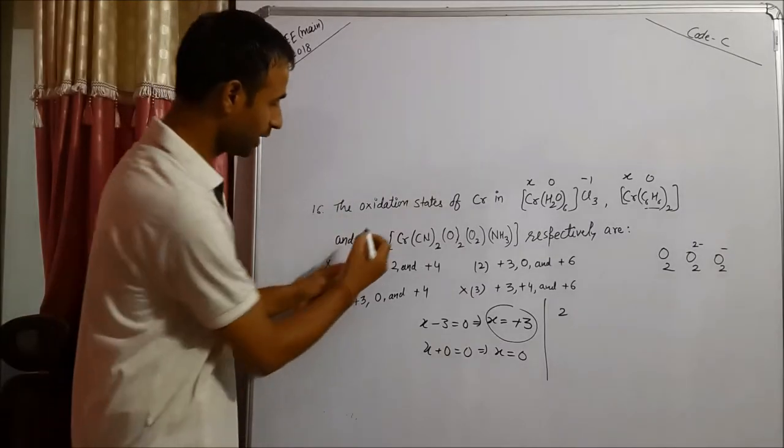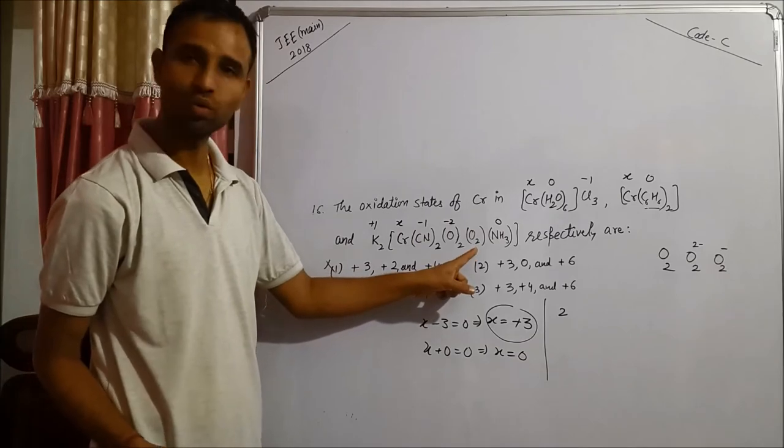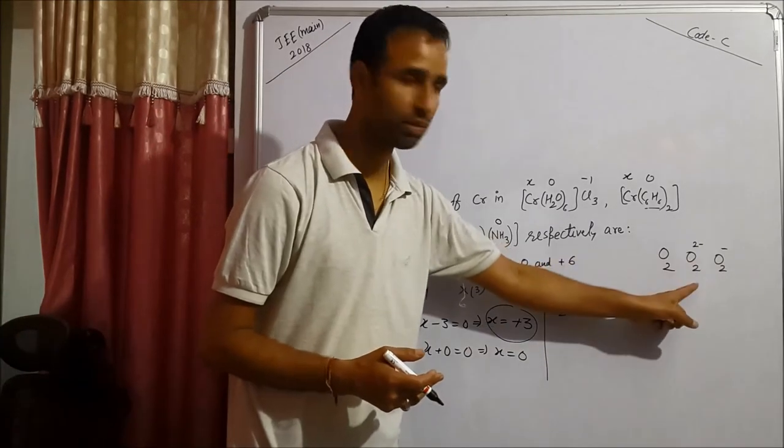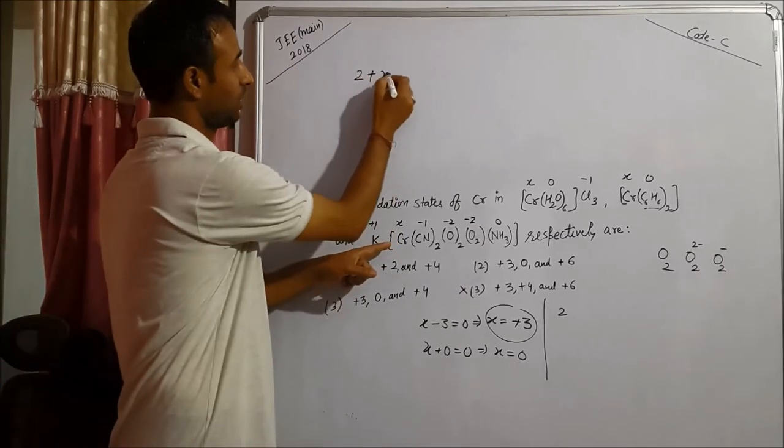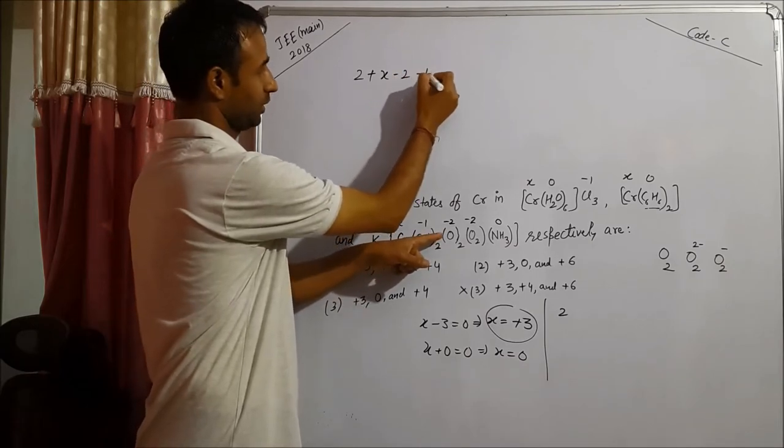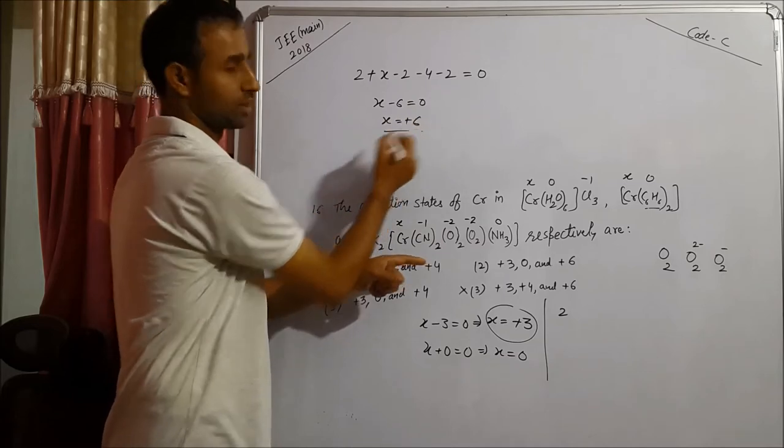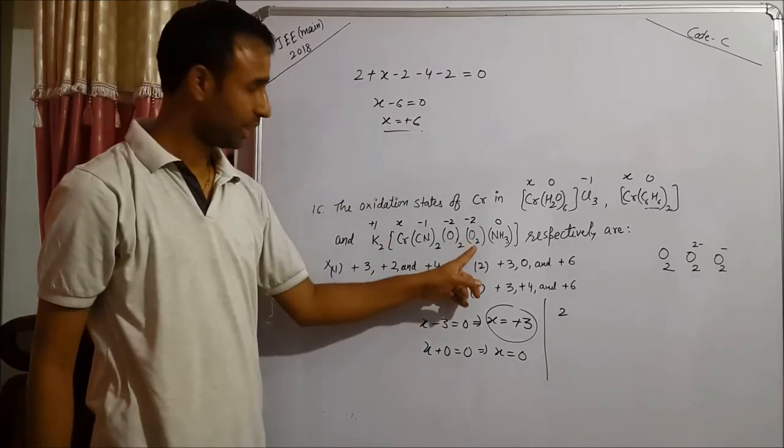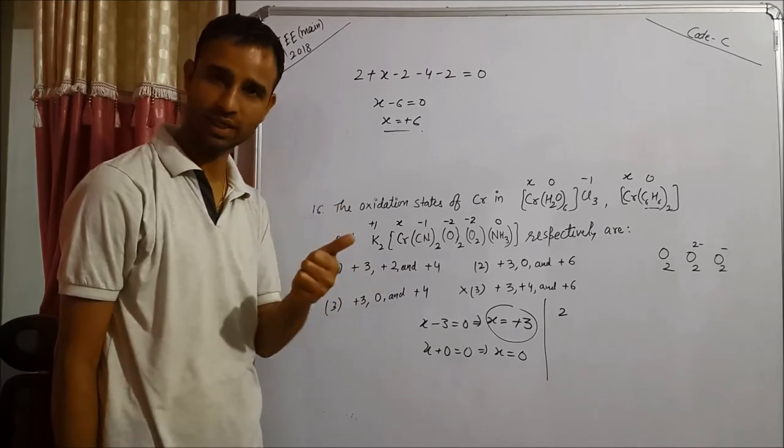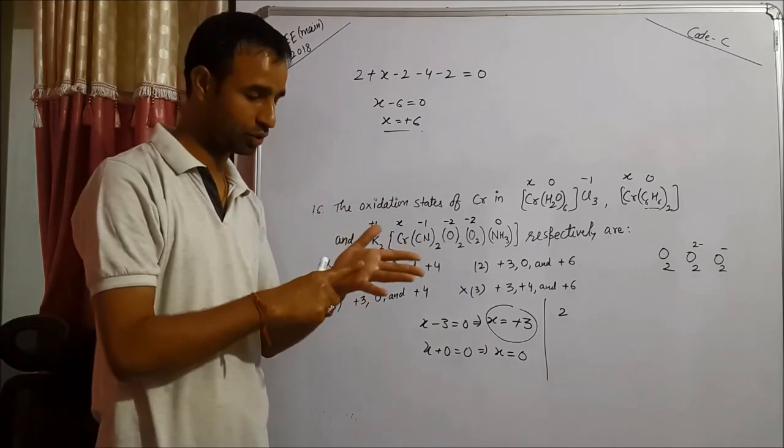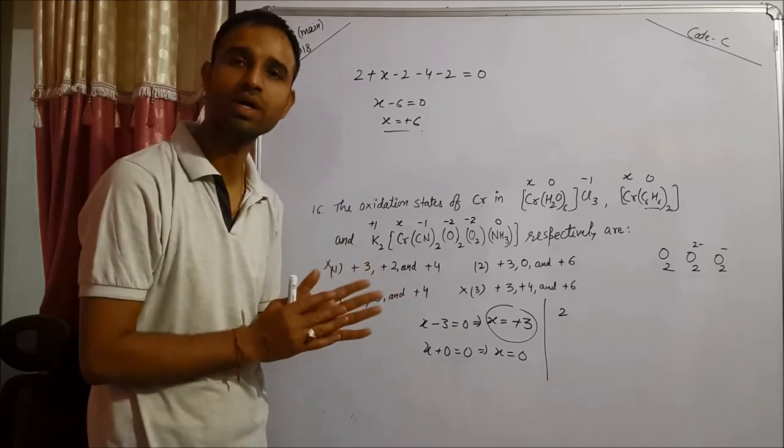The right option is two. If we compare, it is plus 1, x minus 1, minus 2, zero. Confusion is here: O2 can be a molecule, peroxide, or superoxide. It should be peroxide because if we take it as peroxide, then x comes out to be plus 6. In NCERT it is mentioned that chromium oxidation states of plus 3 and plus 6 are stable. Plus 1, plus 4, and plus 5 rarely exist for chromium.